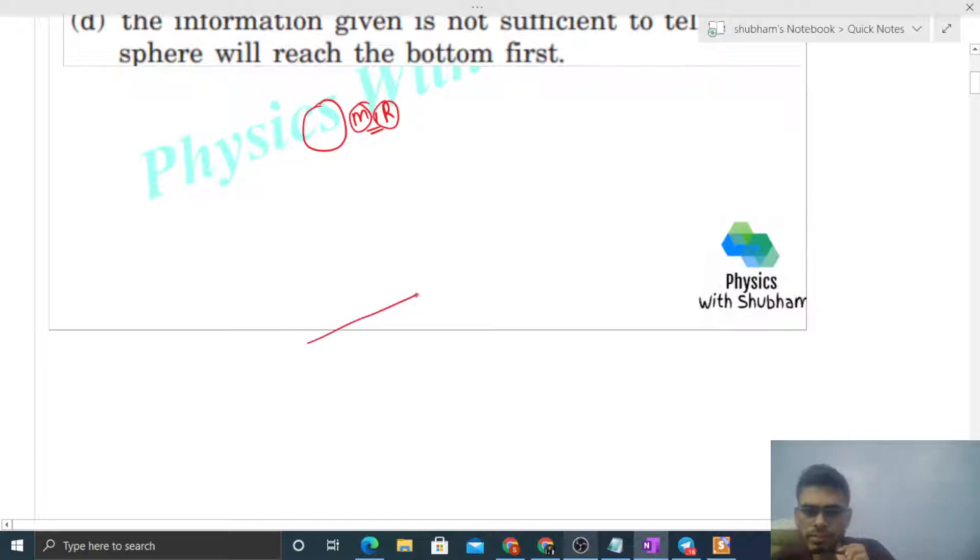We have a rough incline surface with angle of inclination theta. We release this sphere from rest. Let's say the length of the incline that this sphere has to cover is s.